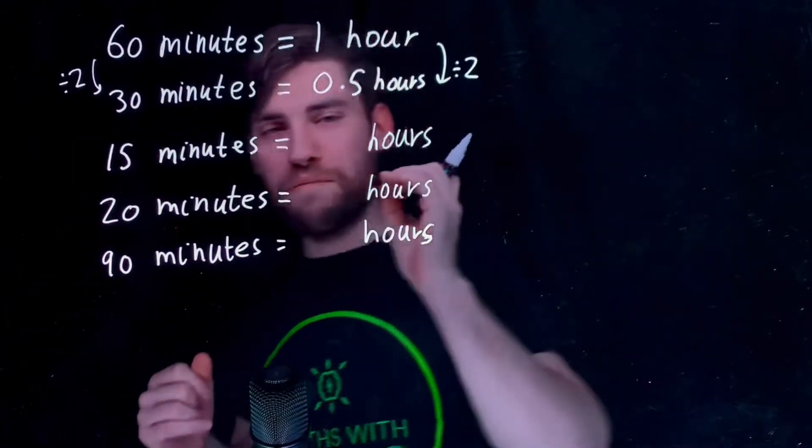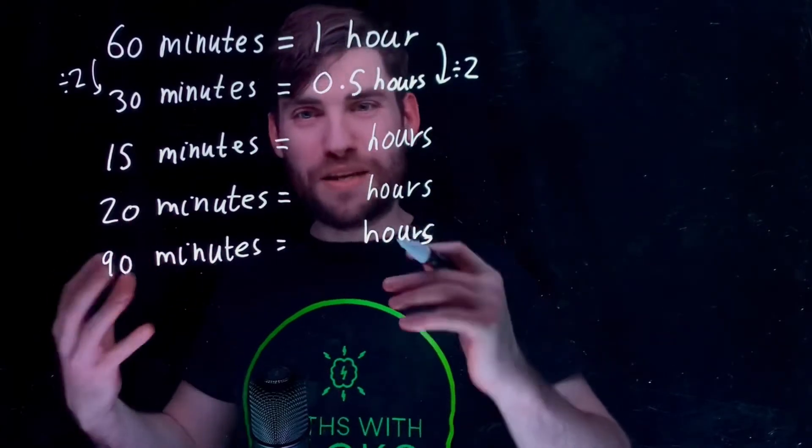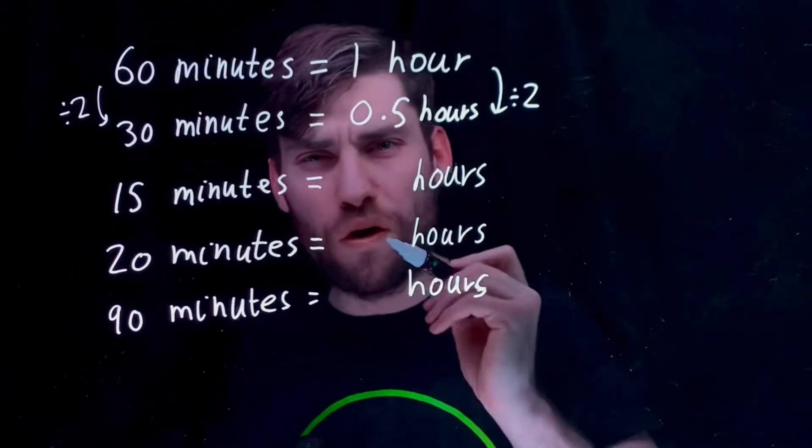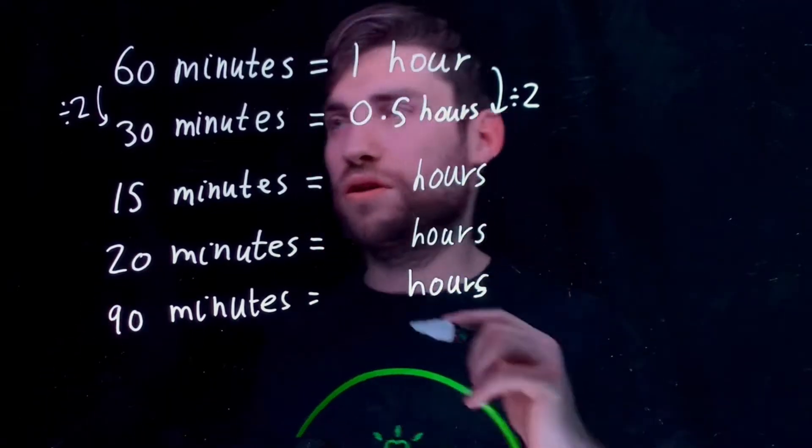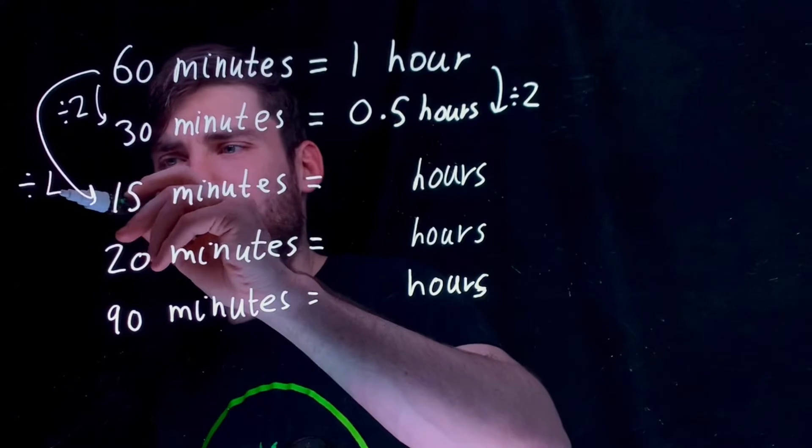Three more times going from minutes to hours. Now we've got 15 minutes. Well, 15 minutes is a quarter of an hour. It's not 0.15 that people always put. You are going from 60 to 15. You are dividing by 4.